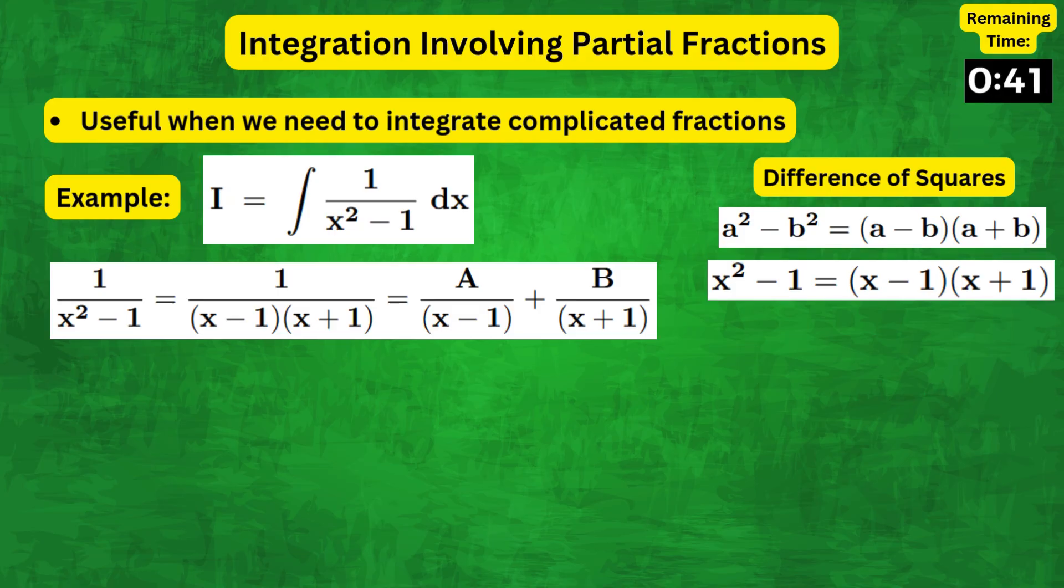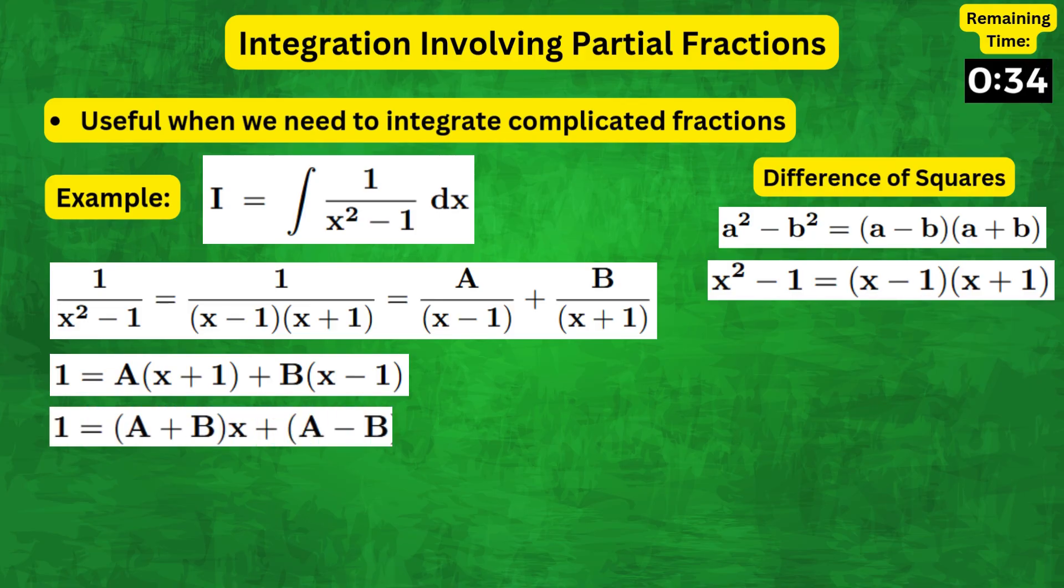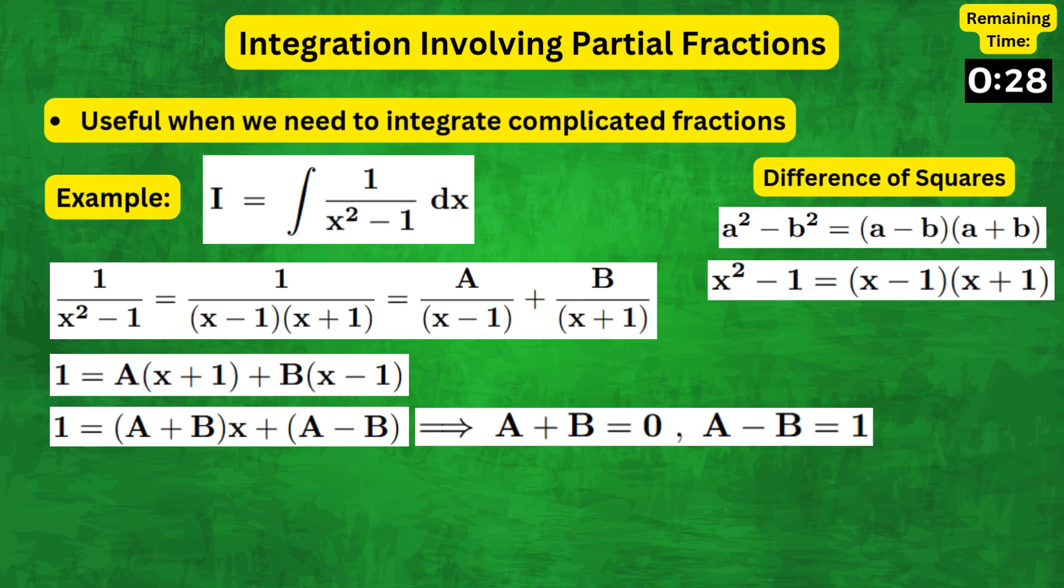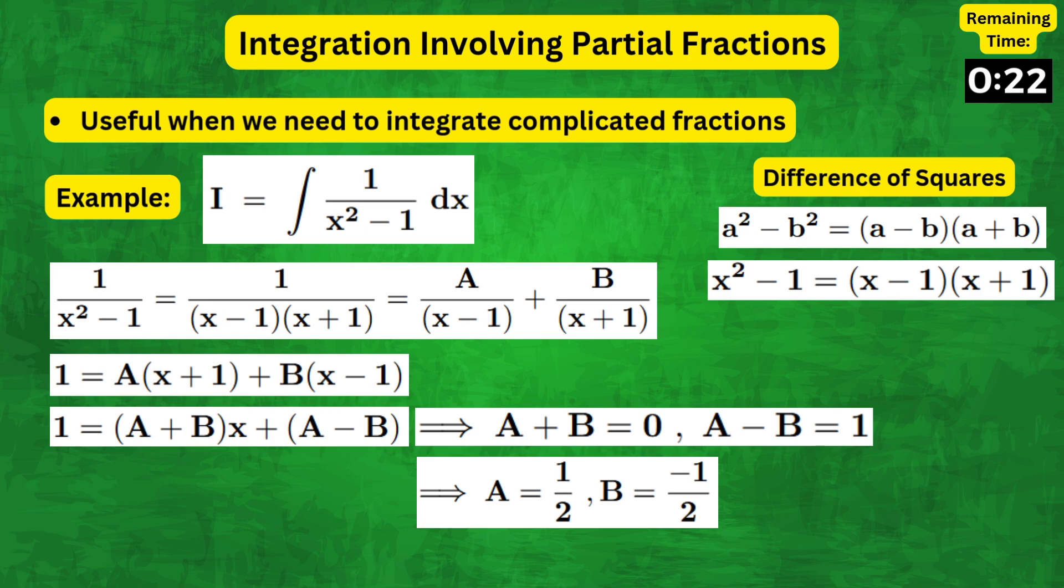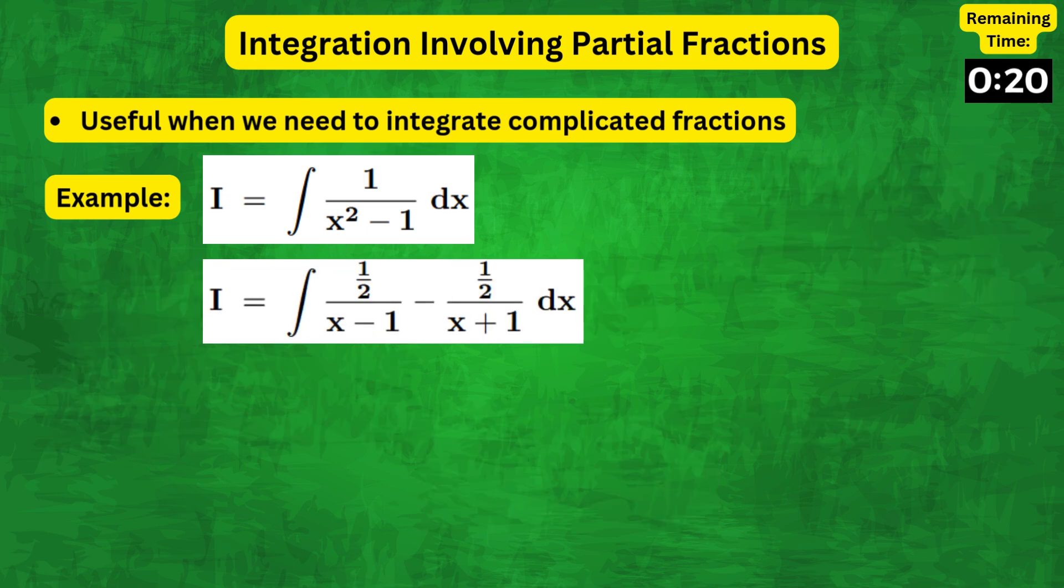multiplying both sides by x squared minus 1, we get 1 equals a(x + 1) plus b(x - 1). And then, comparing the coefficients on both sides, we get the equations a plus b equals 0 and a minus b equals 1. And simplifying, we get a equals 1/2 and b equals minus 1/2. So,